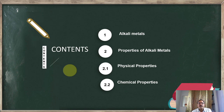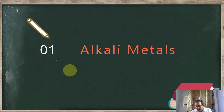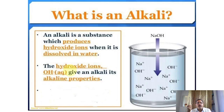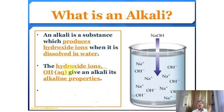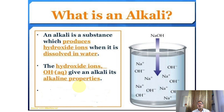Let us move to what alkali metals are. An alkali is a substance which produces hydroxide ions when dissolved in water. As you can see in the image, sodium dissolved in water goes to Na⁺ and OH⁻ ions. This holds good for any other element in this series — lithium, potassium — all dissolve in water and produce hydroxide ions. That hydroxide gives the alkaline, or basic, character, and therefore they are called alkali metals.